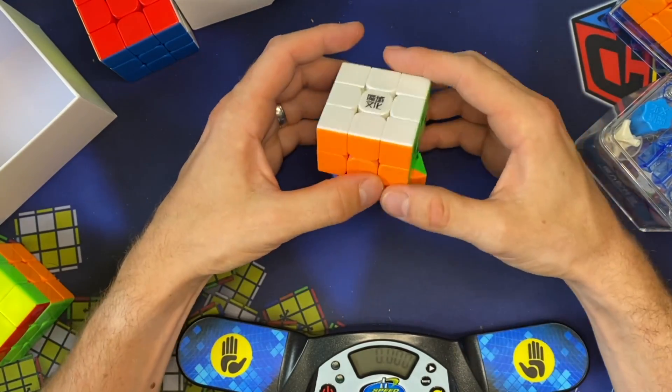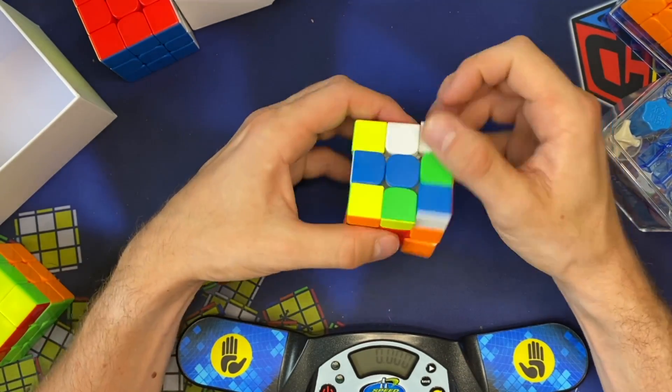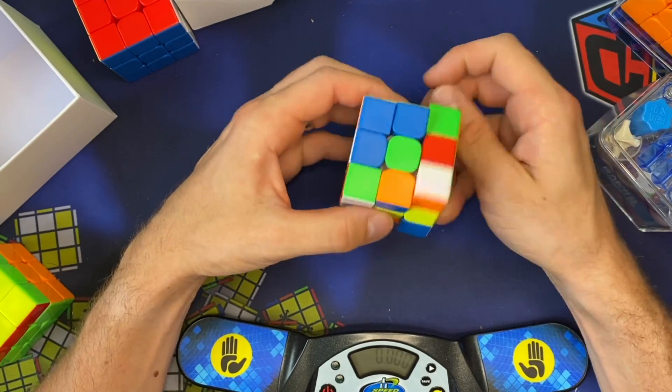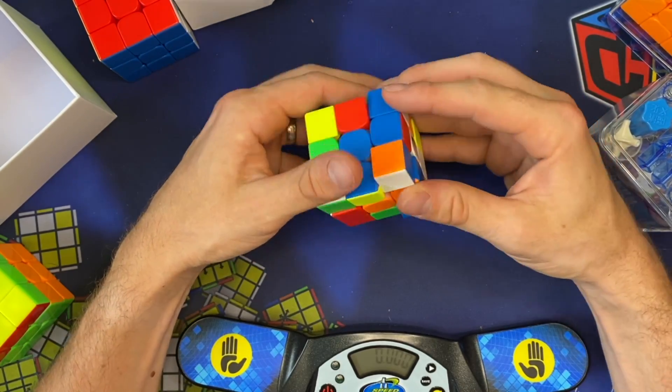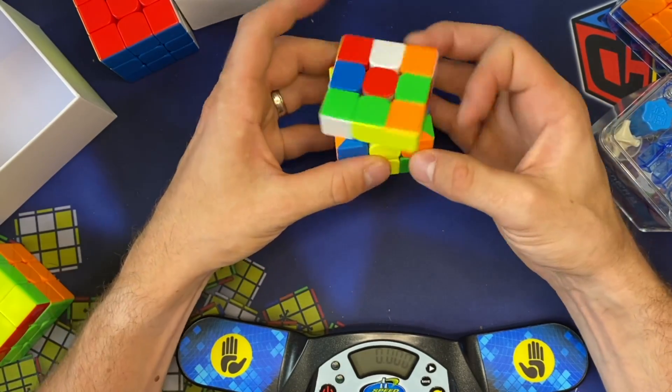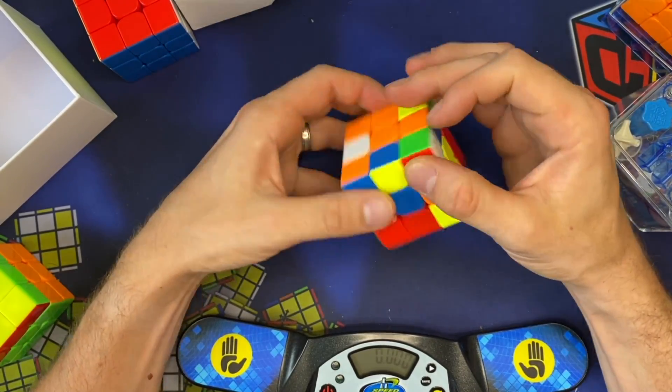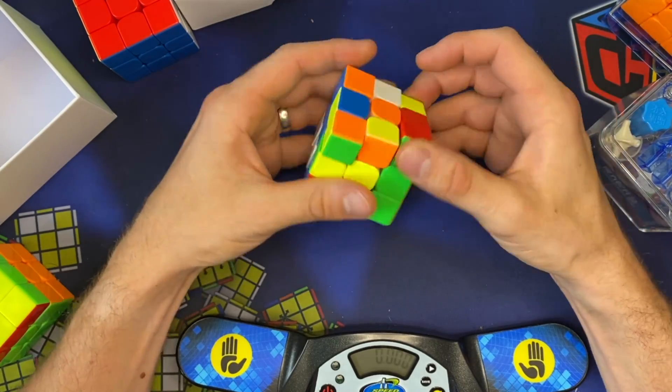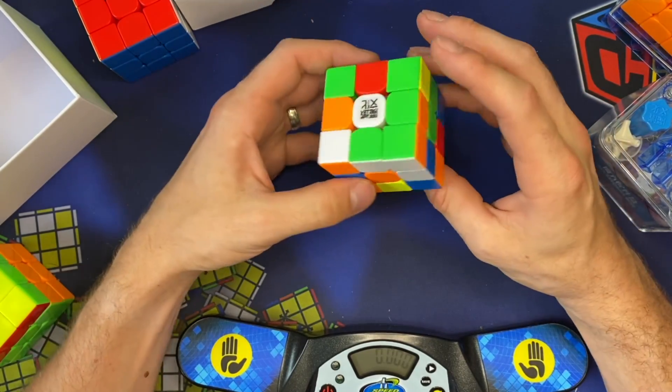So let's do a couple of Roux solves. See how this performs. Again, no setup. If I did any setup, I'd probably use some Nebula to just get it a little bit softer feeling and slow it down a little bit. Okay, let's see what we've got here.